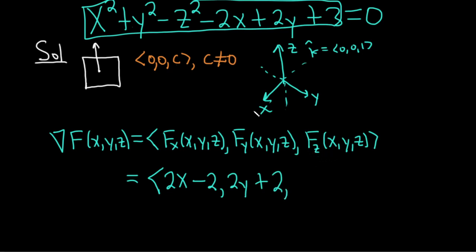And the partial with respect to z, again, x squared is going to become 0. Y squared will become 0. This will become negative 2z. And 0, 0, 0. Okay, so this is also orthogonal to our plane.